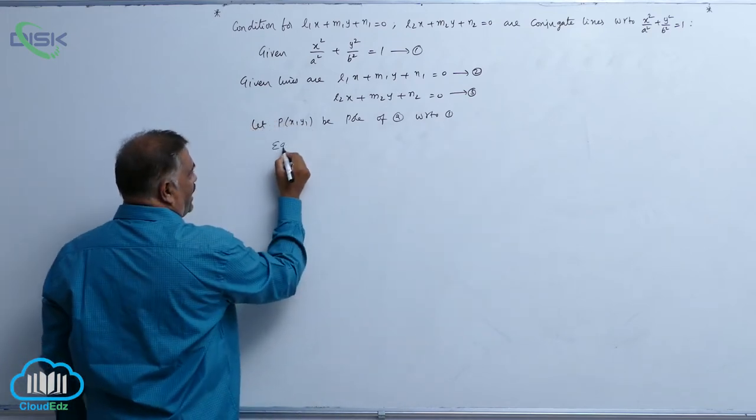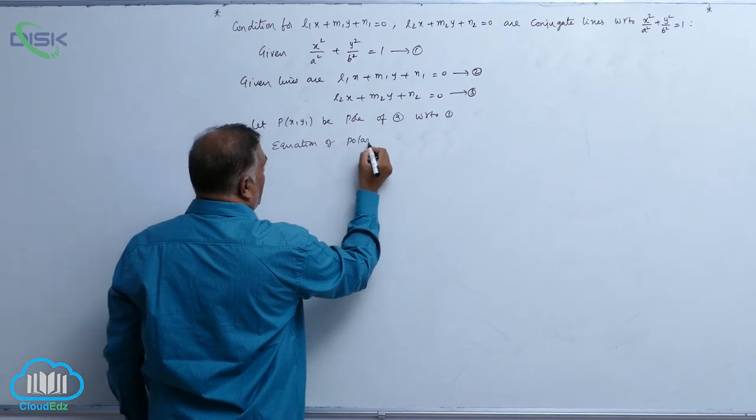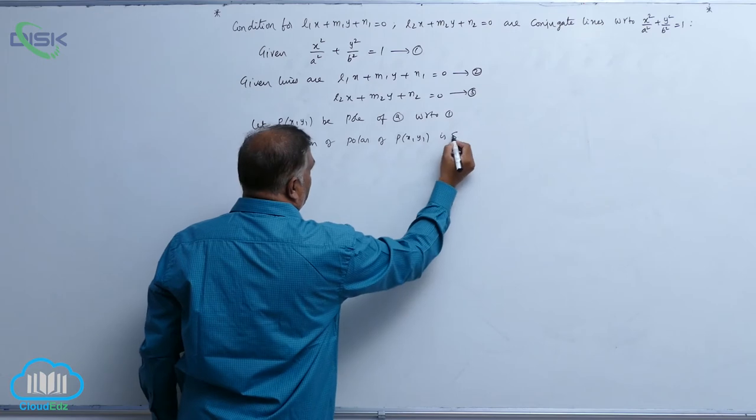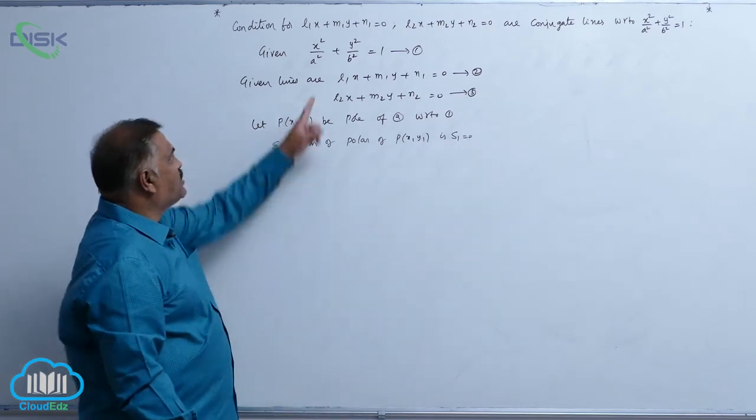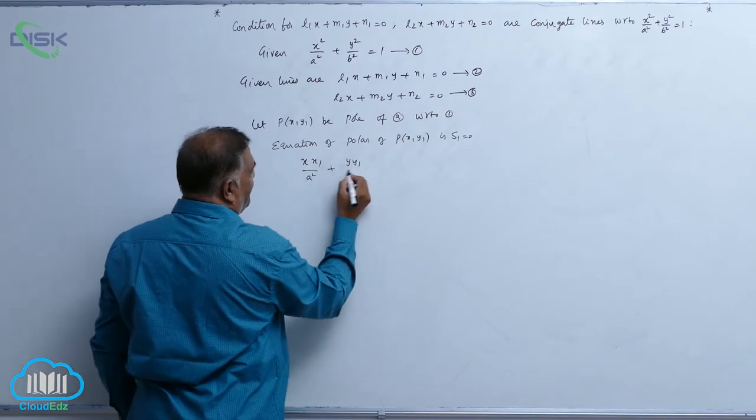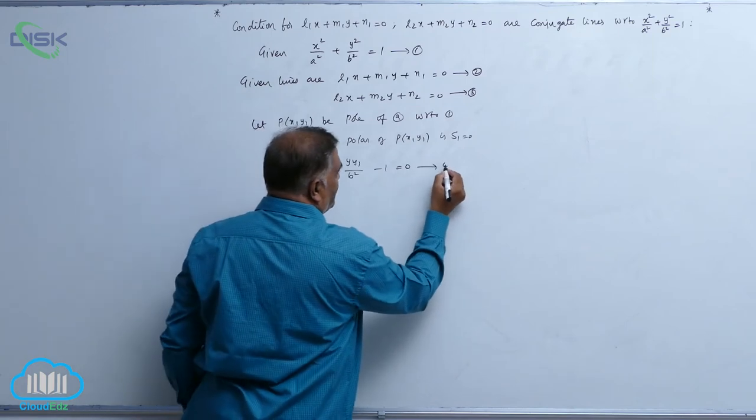So, immediately you can write equation of pole r of px1y1 is s1 is equal to 0. That is, xx1 by a square plus yy1 by b square minus 1 equal to 0, call it equation number 4.